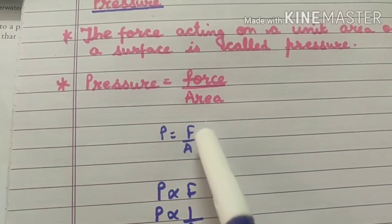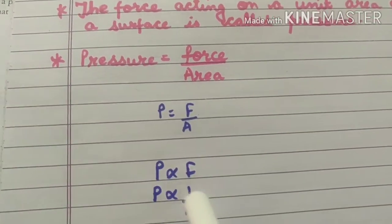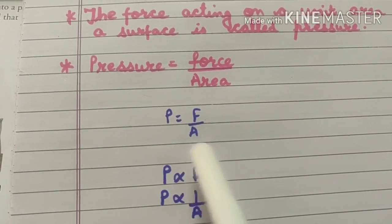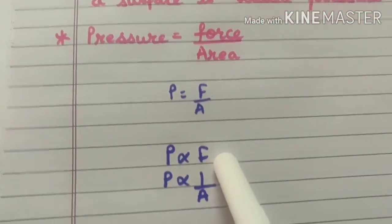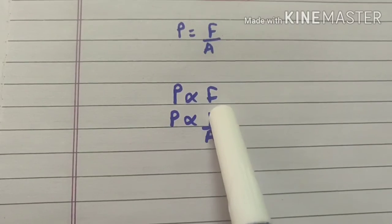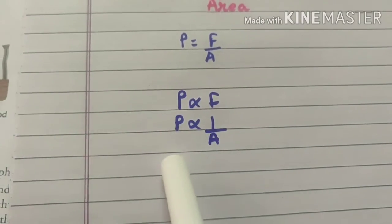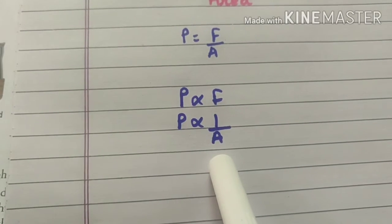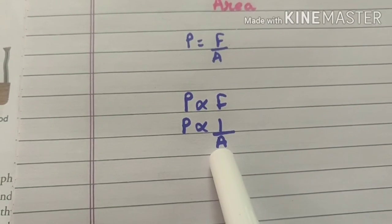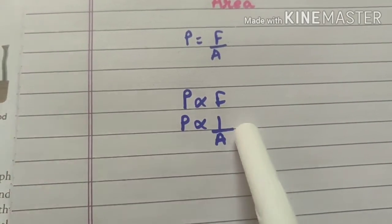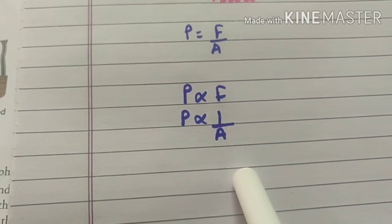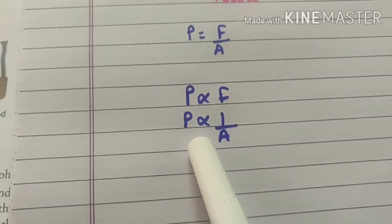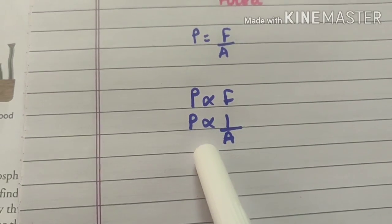P is equals to F upon A. So pressure is directly proportional to force, meaning pressure depends on how much force is applied. And pressure is inversely proportional to area. When area is in the denominator, it means if area is more, pressure is less. If area is less, then pressure will be more.